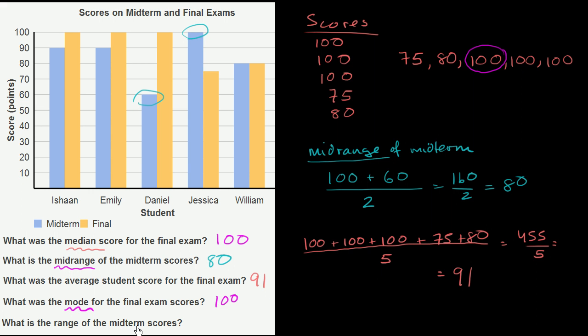What is the range of the midterm scores? The range is the difference between the highest and lowest scores. For the midterm, the highest score is 100 and the lowest is 60. So the range equals 100 minus 60, which is 40. Note that the mid-range was the average of these two values, while the range is just their difference. The range of the midterm scores is 40.